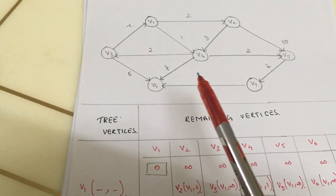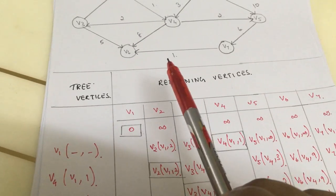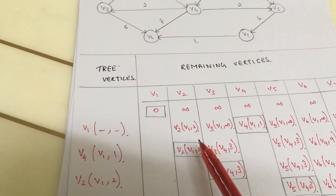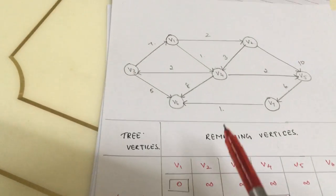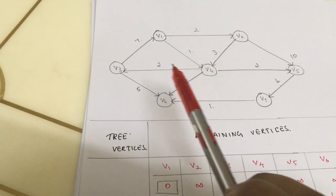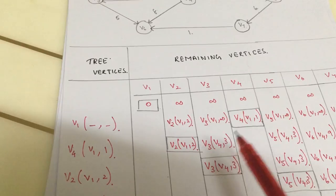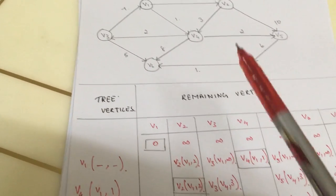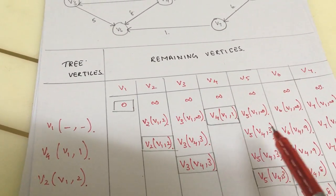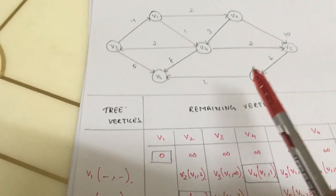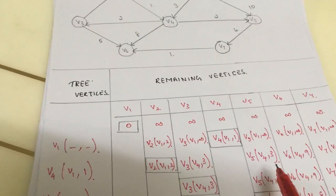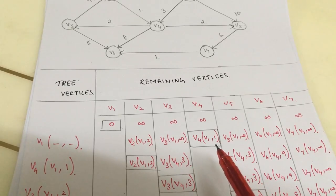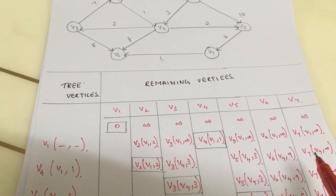From v4, we will consider the other vertices. v2 has no direction, therefore we will write the previous value. From v4 to v3, the cost is 2; we add the previous value of 1, so 2 plus 1 equals 3. For v4 to v5, the cost is 2; adding the previous value of 1 gives a minimum of 3. For v6, from v4 the cost is 8; adding the previous value of 1 gives 9. v7 is infinity.